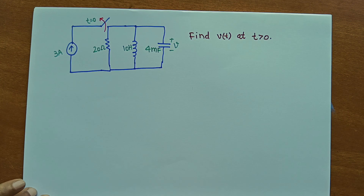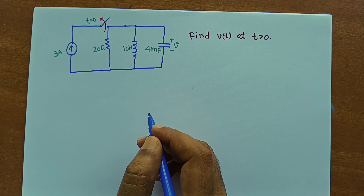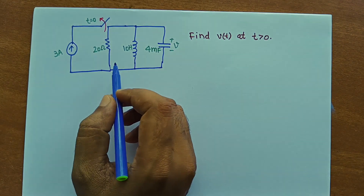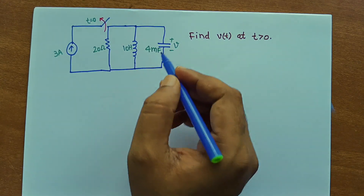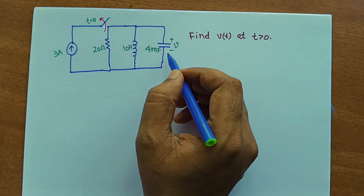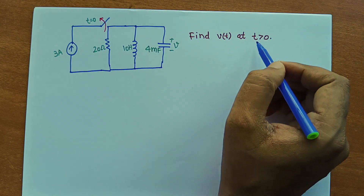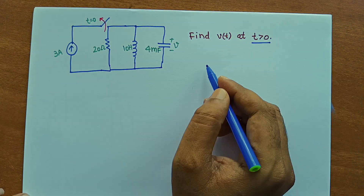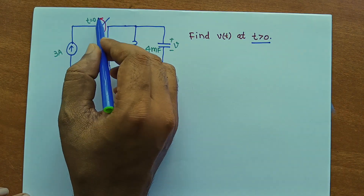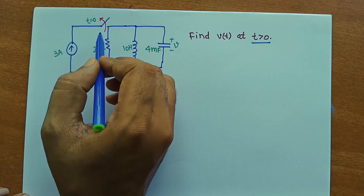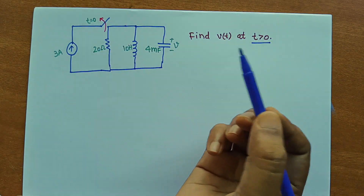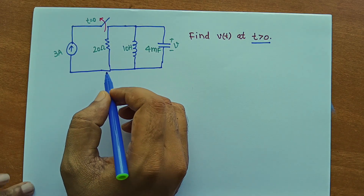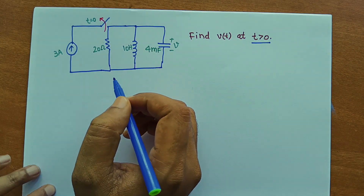Hello friends, welcome to my YouTube channel RF Design Basics. In this video, we are going to solve one problem with an RLC circuit, where we have to find the voltage at the capacitor at T greater than zero. This switch was connected for a long time and at T equal to zero, this switch was opened. Let us see how we solve this kind of problem.